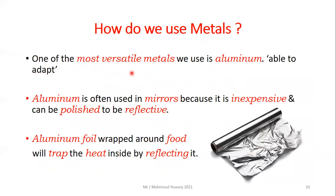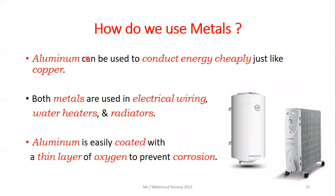One of the most versatile metals we use is aluminum — versatile means able to adapt. Aluminum is often used in mirrors because it is inexpensive and can be polished to be reflective. Aluminum foil wrapped around food traps heat by reflecting it. Aluminum can also conduct energy cheaply, just like copper — both are used in electrical wiring, water heaters, and radiators. Aluminum is easily coated with a thin layer of oxygen to prevent corrosion.